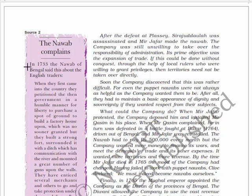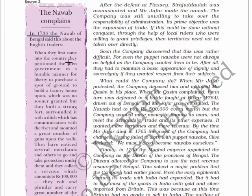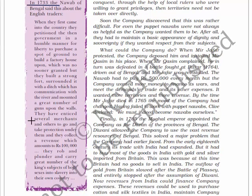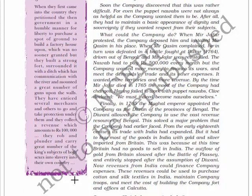Source: The Nawab Complains. In 1733, the Nawab of Bengal said about the English traders: 'When they first came into the country they petitioned the government in a humble manner for liberty to purchase a spot of ground to build a factory house upon. No sooner was this granted than they built a strong fort surrounded by a ditch with communication to the river and mounted a great number of guns upon the wall. They enticed merchants to go and take protection under them, collect revenue amounting to one lakh, and rob and plunder and carry great numbers into slavery.'